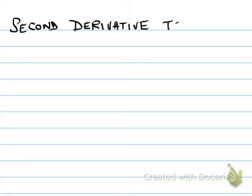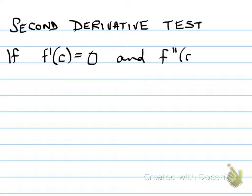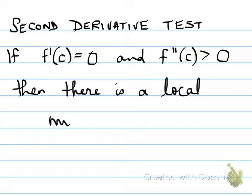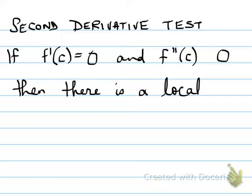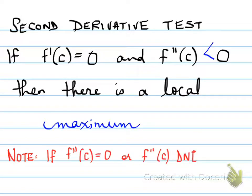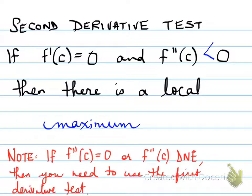The Second Derivative Test: if f'(c) = 0 and f''(c) > 0, then there is a local minimum. If f'(c) = 0 and f''(c) < 0, then there is a local maximum. Note: if the second derivative equals zero at that point, or the second derivative at c does not exist, then you need to use the first derivative test to determine the key critical information.